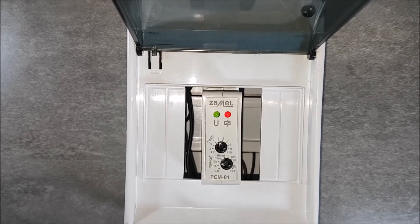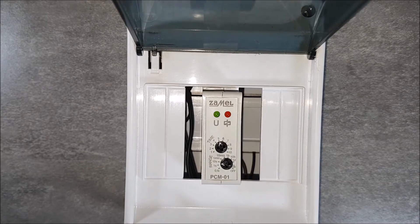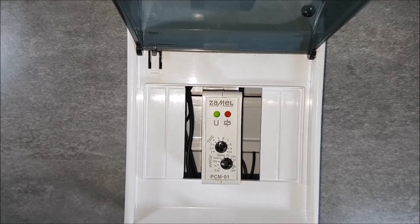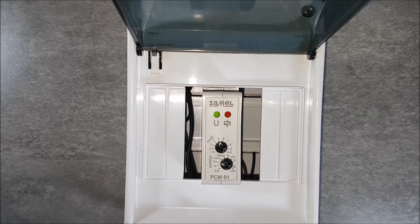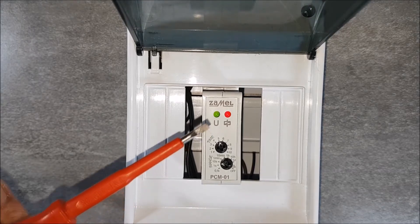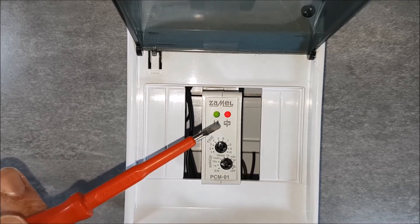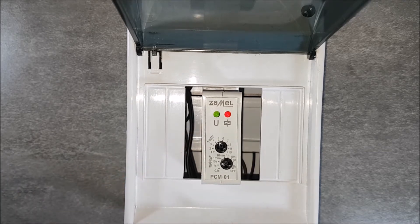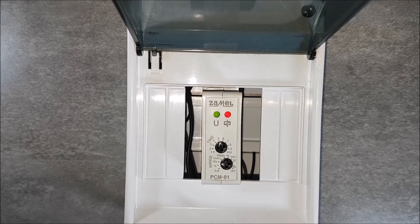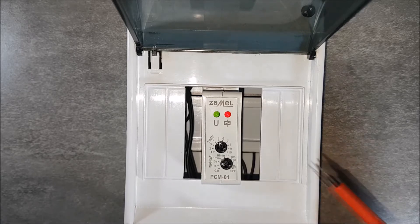Restart PCM01 relay by switching off and then on the power supply. After the supply voltage returns, the relay counts down the time, which is indicated by blinking the red LED, and then activates the output circuit, which is indicated with the red LED lighting up.